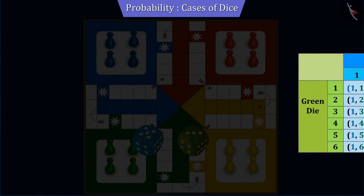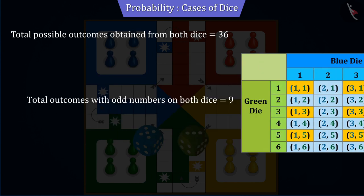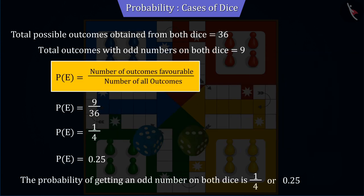Similarly, if we find the probability of getting an odd number on both dice, then it also gives us 9 by 36 or 0.25.